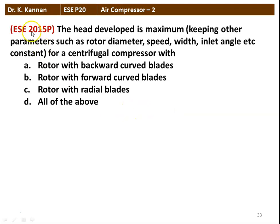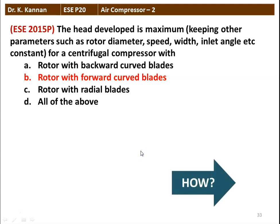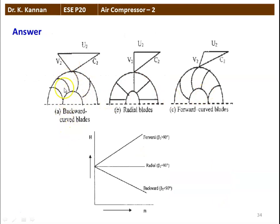The next question is from the 2015 question paper. The head developed is maximum, keeping other parameters such as rotor diameter, speed, width, and inlet angle constant, for a centrifugal compressor with: backward curved blade, forward curved blade, radial blade, or all of the above. The head developed is maximum for the forward curved blade (outlet angle β > 90°). For backward curved blade β < 90°, and radial blade β = 90°. The comparison graph of mass flow rate versus head rise shows that forward curved blades give the highest head, while backward curved blades give higher efficiency.